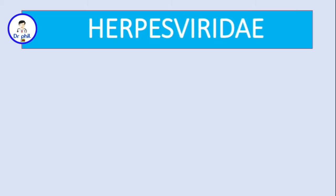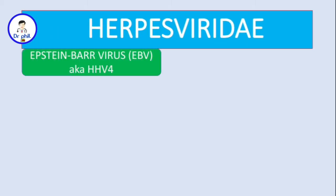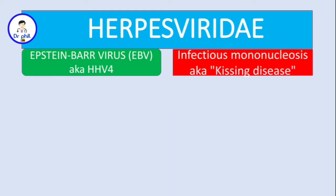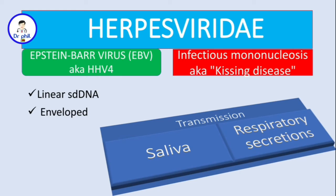Our next member of the Herpesviridae family is the Epstein-Barr virus, or EBV, also known as Human Herpesvirus 4. This virus causes infectious mononucleosis, or mono, also known as the kissing disease. The genome is a linear double-stranded DNA and, like other members of the Herpesviridae family, it has an envelope derived from the nuclear envelope.